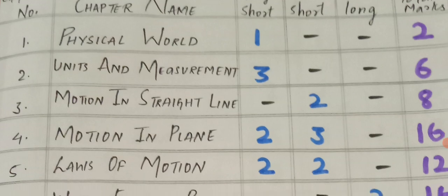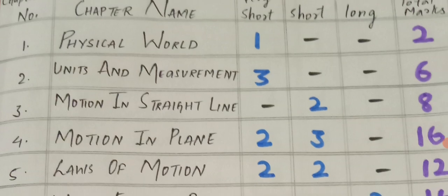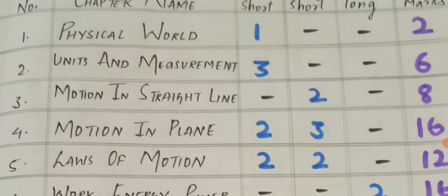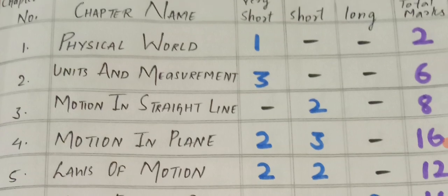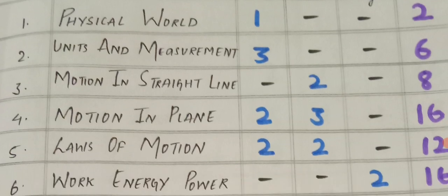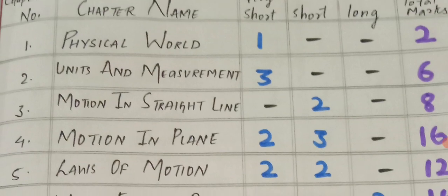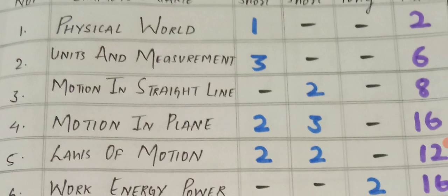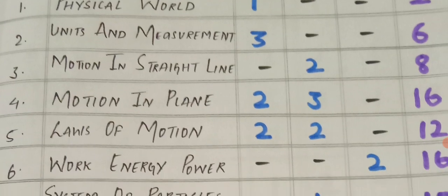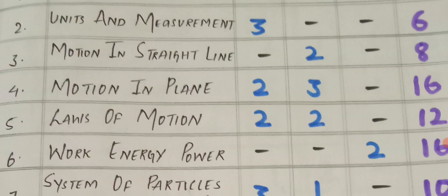Next, Units and Measurement: 3 VSCQs, we are expecting this year, total 6 marks. Motion in a Straight Line: 2 SAQs. Motion in a Plane: 2 VSCQs and 3 SAQs, total 16 marks. Laws of Motion: 2 VSCQs, 2 SAQs, total 12 marks.